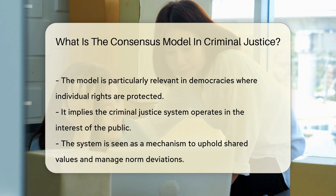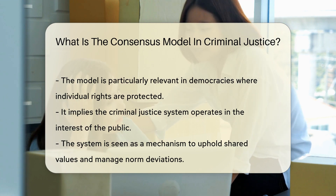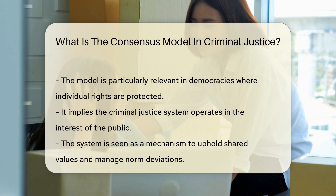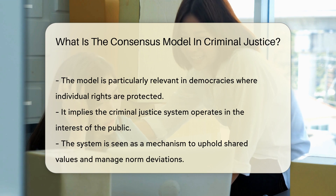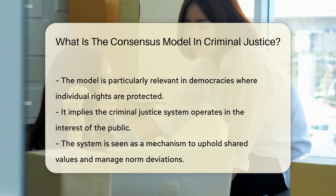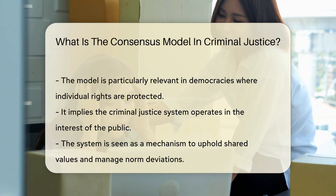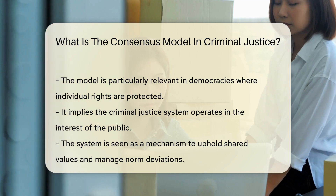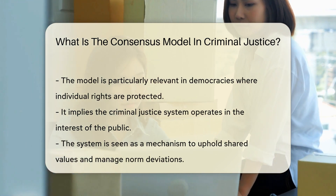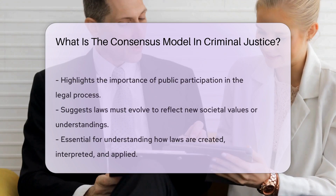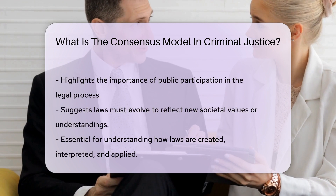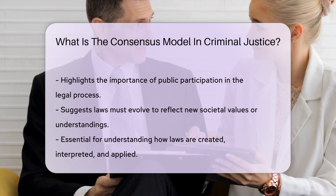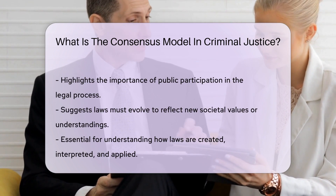In practical terms, the consensus model implies that the criminal justice system operates in the interest of the general public. It serves to maintain social order by enforcing laws that reflect the collective will. The system, from law enforcement to the judiciary, is seen as a mechanism to uphold shared values and manage deviations from these norms.